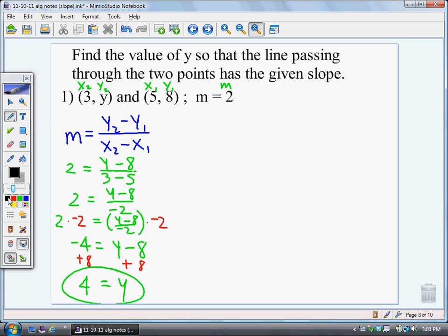A second way, which sometimes would work, you could make like a little table. You have x, y. The points we have, we have 5, 8, and we're trying to get 3 something. We just don't know what that something is.